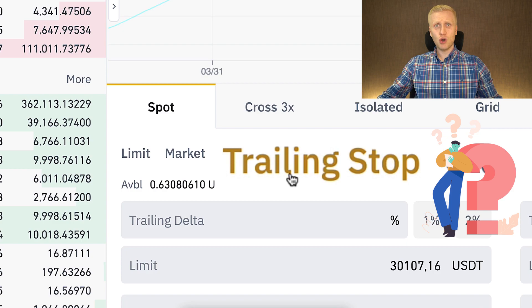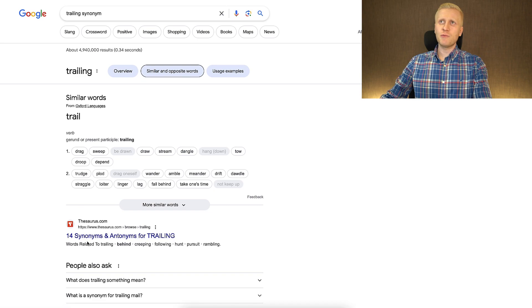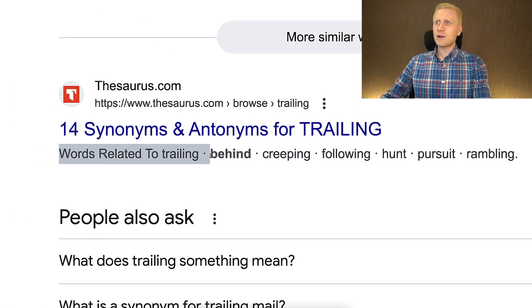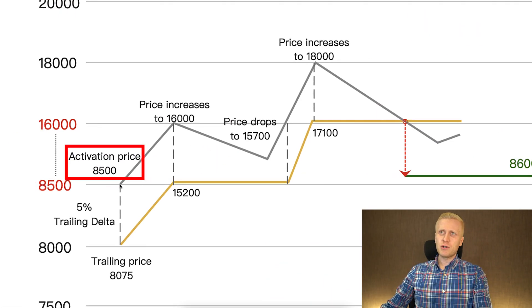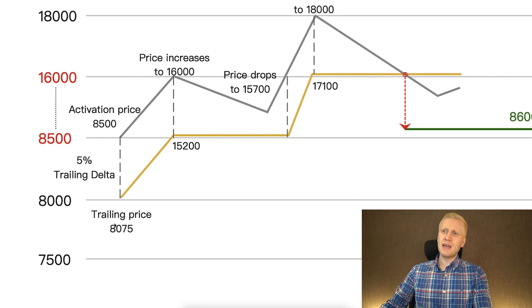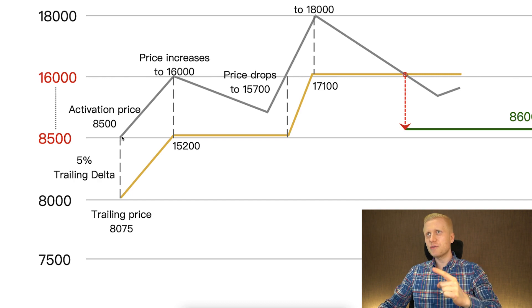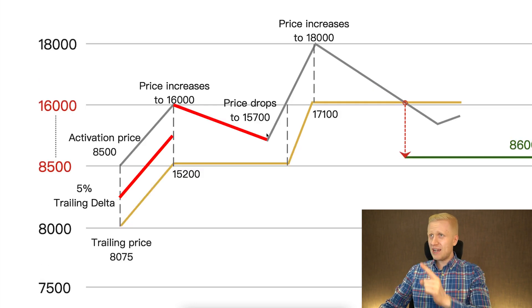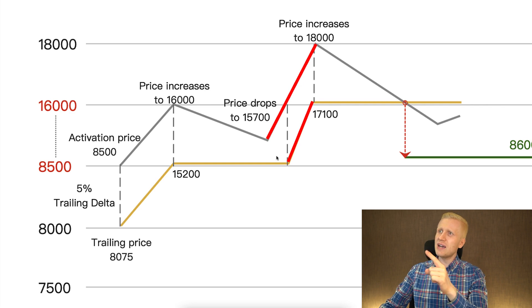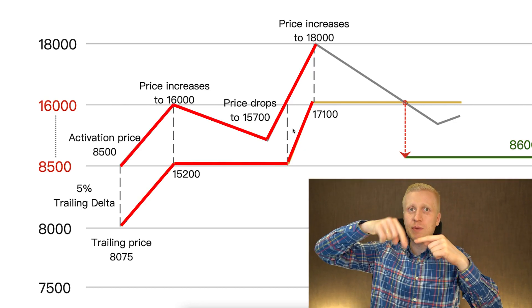But what is a trailing stop loss? It's also very simple. To help you understand it easily, let me show you synonyms related to trailing. According to Google, words related to trailing are 'behind' and 'following.' You can see here an example: if the activation price is $8,500, the trailing price would be below. But then as the price of that asset starts moving higher, the stop loss follows behind. It keeps on following the price as it moves higher — that's why it's called a trailing stop loss.